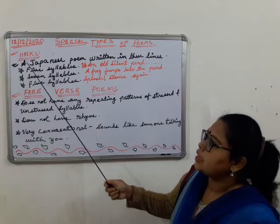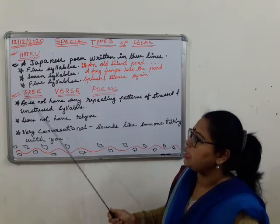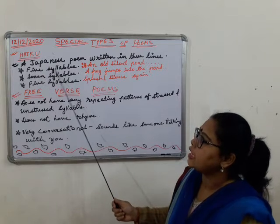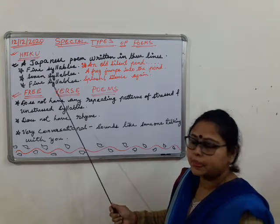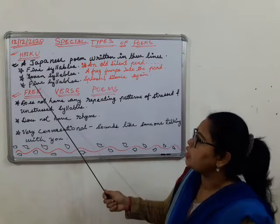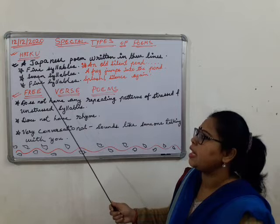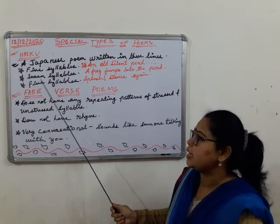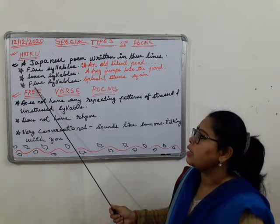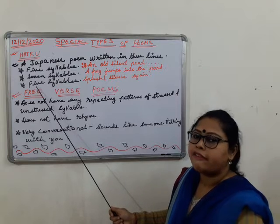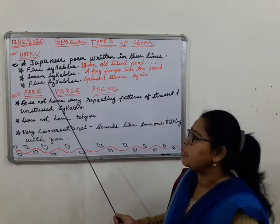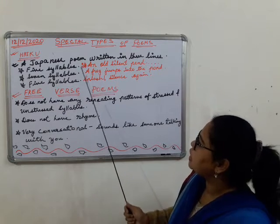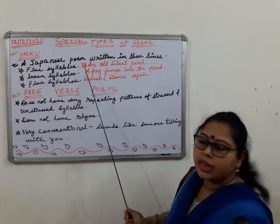Now let us see the special thing about haiku. In the first line, there are five syllables. In the second line, there are seven syllables. And in the third line, five syllables again.